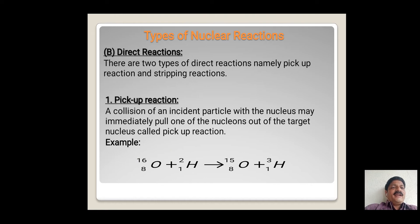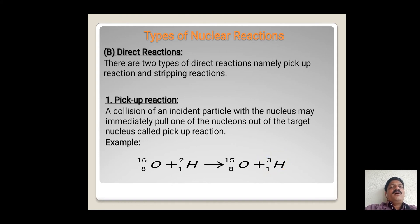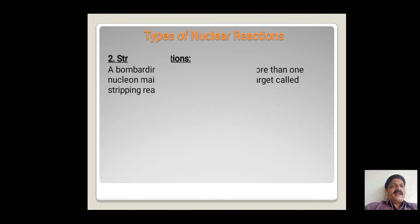After the reaction, we get oxygen with mass number 15 — having lost one nucleon — and hydrogen gains one nucleon. Such types of nuclear reactions are called pickup nuclear reactions.